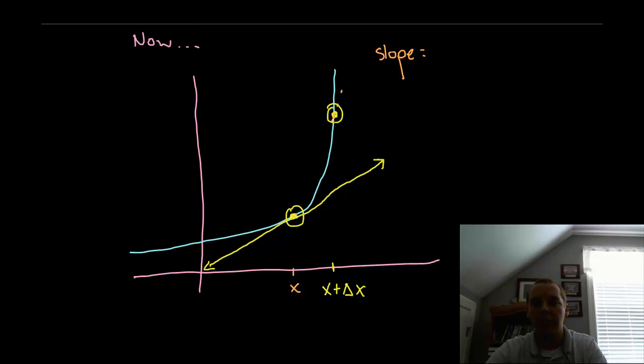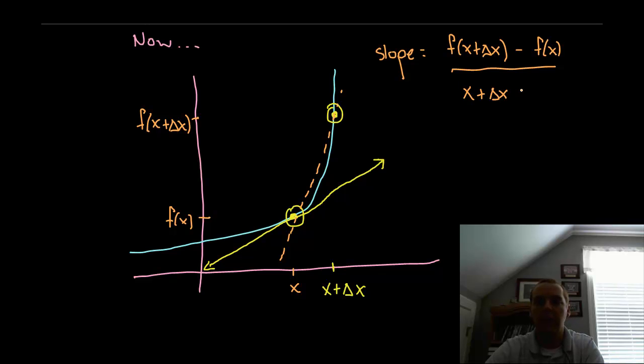Alright, now if we find the slope between these two given points, let's see if we can write that as a formula. If this is x, that will make this y value f of x. And if this is x plus delta x, that will make this y value f of x plus delta x. And so if you do rise over run, you'd get something like this. f of x plus delta x, that's your y2, your second y value, minus f of x, that's your first y value, divided by x plus delta x minus x, y2 minus y1 over x2 minus x1.